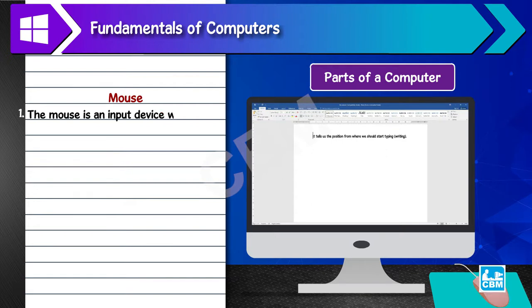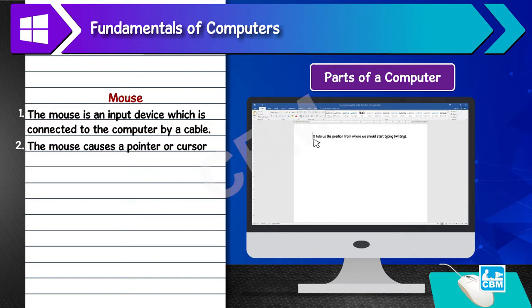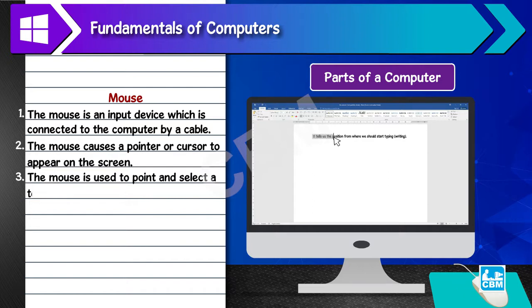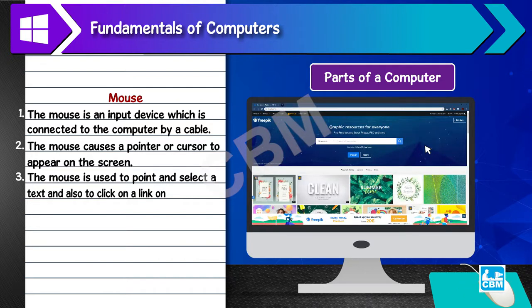Mouse: 1. The mouse is an input device which is connected to the computer by a cable. 2. The mouse causes a pointer or cursor to appear on the screen. 3. The mouse is used to point and select a text and also to click on a link on a web page.